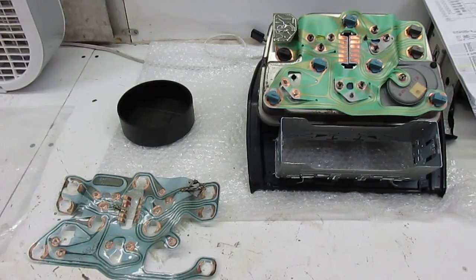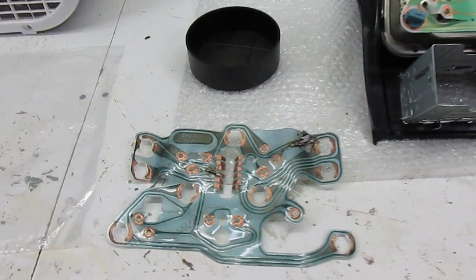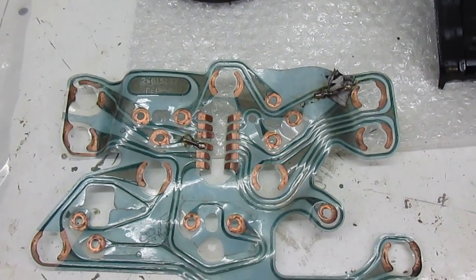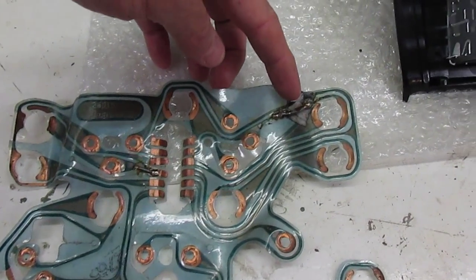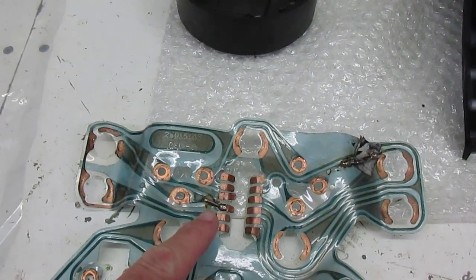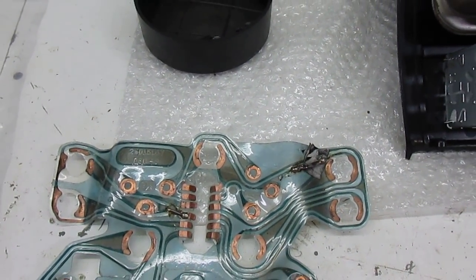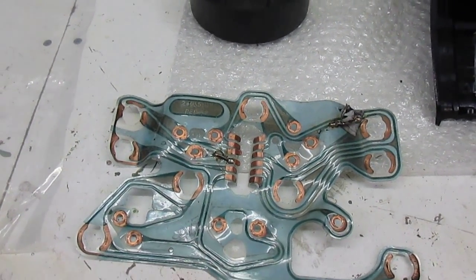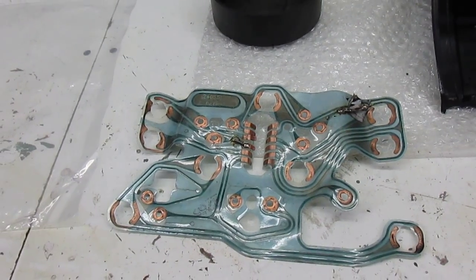So when I started getting into it I realized that my printed circuit was in pretty sad shape. Someone had actually already been in there and tried to repair one of the traces as you can see here, and then also here. So a lot of the gauges weren't working properly and the lights for illumination wasn't working properly.